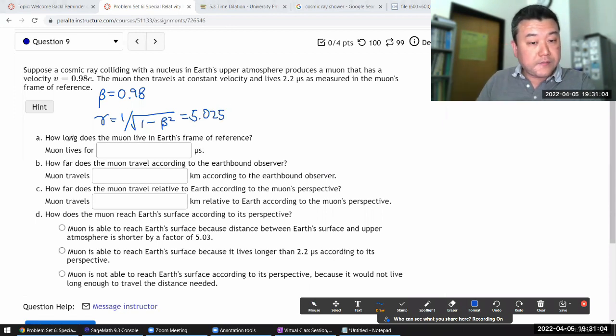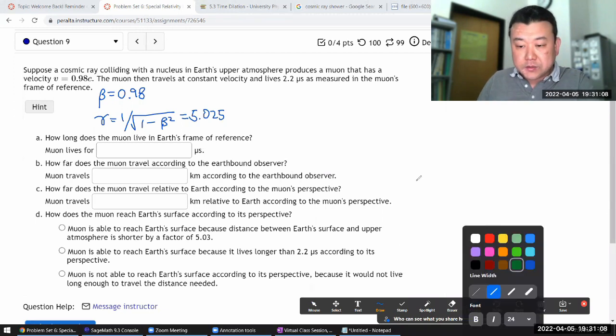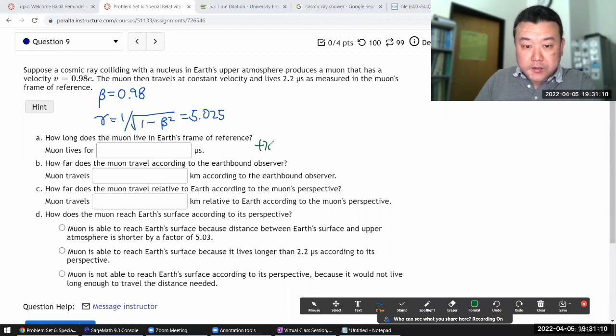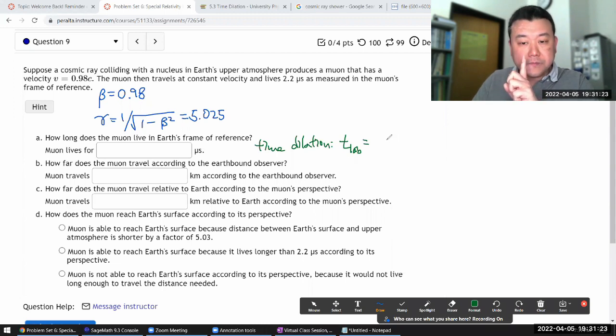How long does the muon live in Earth's frame of reference? That's time dilation. So the formula that you need for time dilation. Is that in the lab frame, where the muon is moving, it's going to be living for its own proper lifetime multiplied by gamma. So this will be, let me just write down gamma tau for now. And I'll plug in all the numbers in altogether.